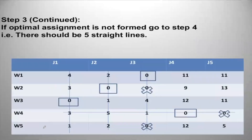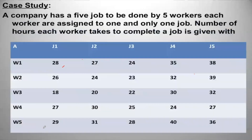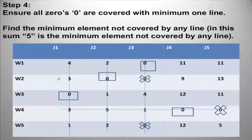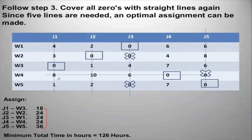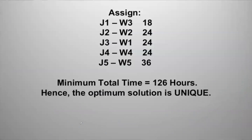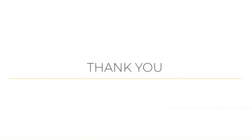Take the values from the original table: worker three takes 18 hours to complete J1, worker two takes 24 hours for J2, worker one takes 24 hours for J3, worker four takes 24 hours for J4, and worker five takes 36 hours for J5. Add them all up and this will be your total time — the optimal solution. The optimal solution is unique here because no zeros are left unassigned. Thank you everyone.